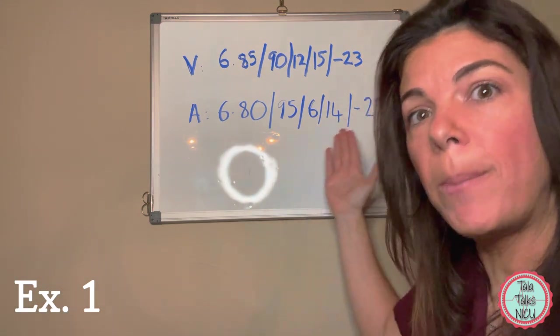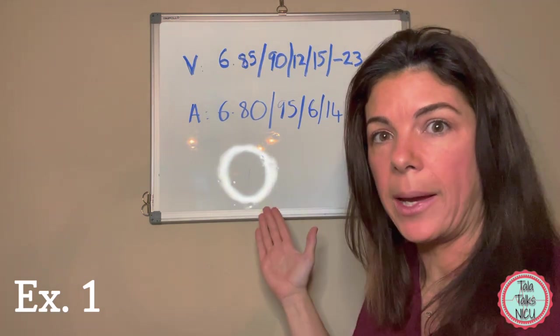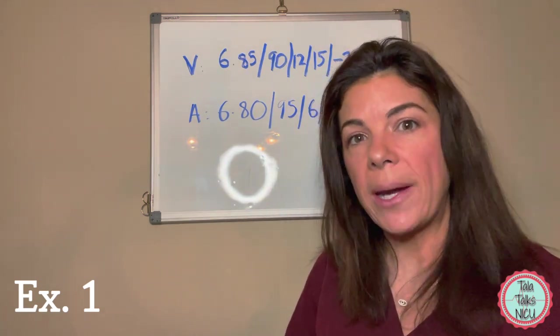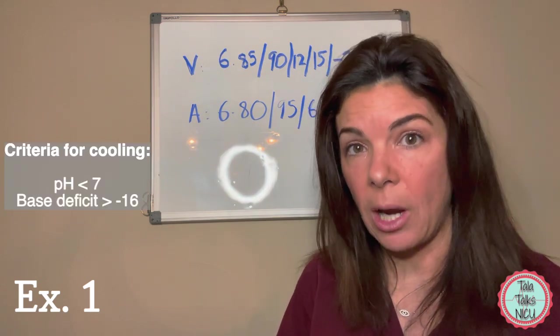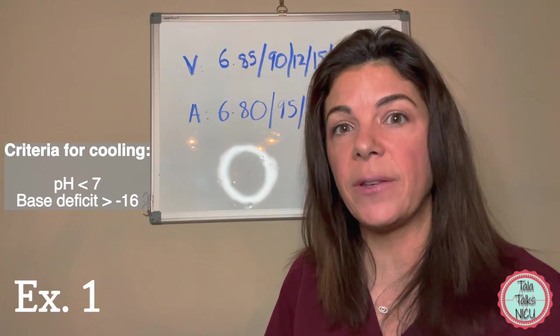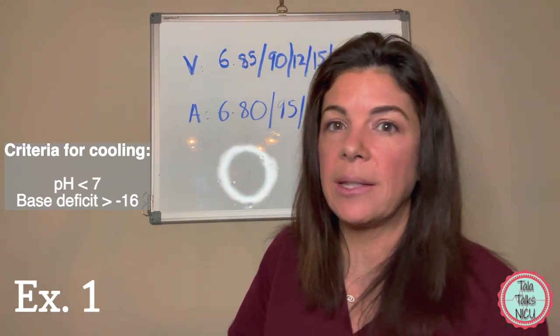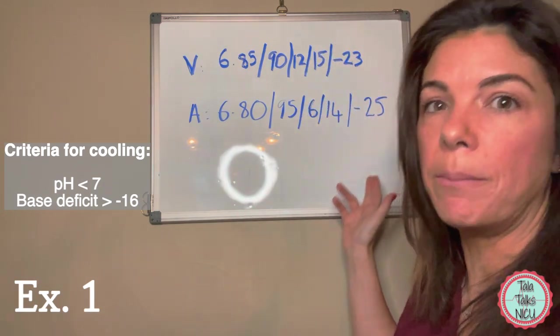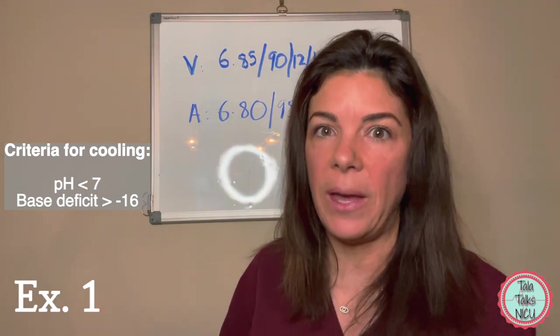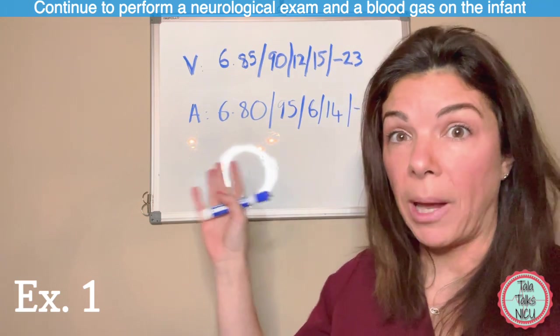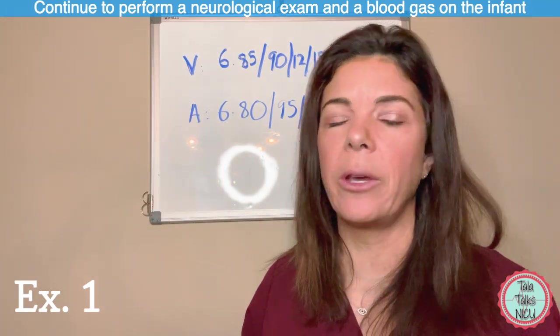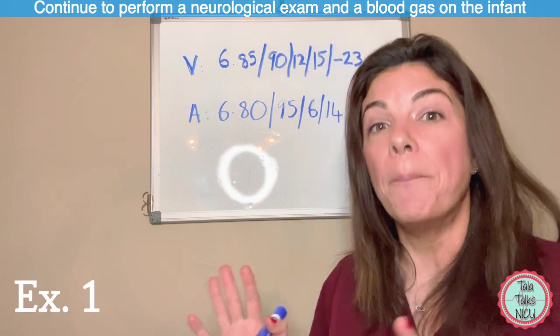The fact that there is such significant metabolic acidosis, minus 23 and minus 25, means that this baby is really under a lot of stress and has probably been lacking oxygen for some time. Remember the criteria that a lot of institutions use for cooling is a pH of less than 7 and a base deficit of more than minus 16. Minus 23 and minus 25 definitely fit into that category.